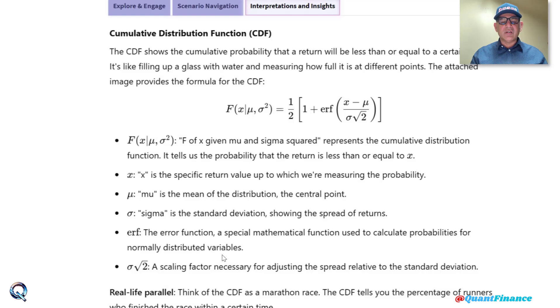And this part which is in denominator, sigma square root 2, is a scaling factor necessary for adjusting the spread relative to the standard deviation.